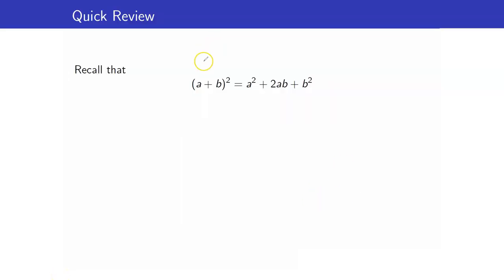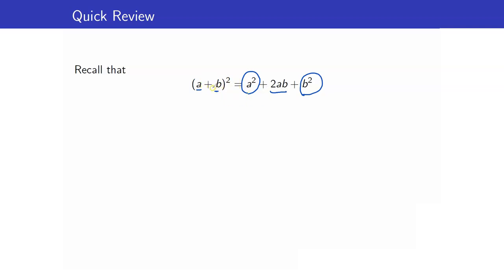Let us recall that the square of a binomial a plus b is equal to a squared plus 2ab plus b squared. If you have the square of a binomial, you get the square of the first term, the square of the last term, and a middle term which is twice the product of the two. The sign of the middle term is determined by the sign in the binomial — if it's plus, it's plus; if it's minus, it's minus.